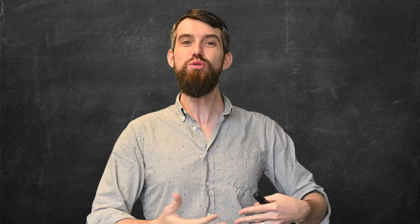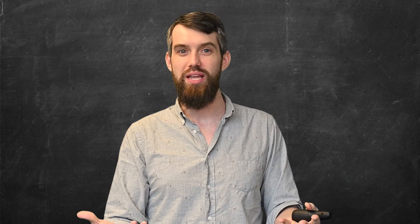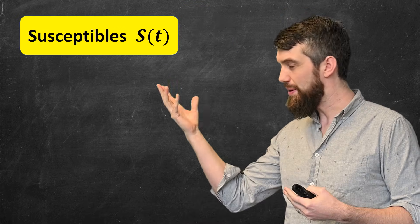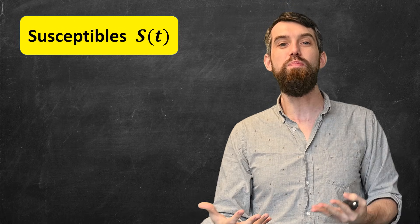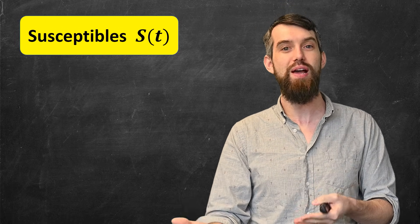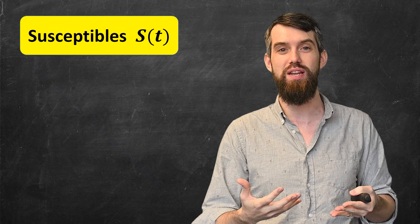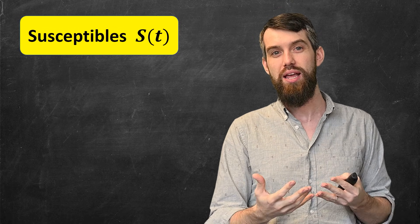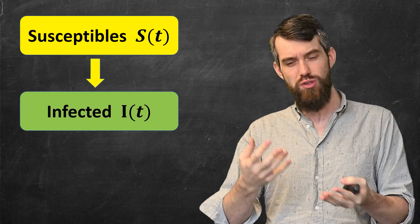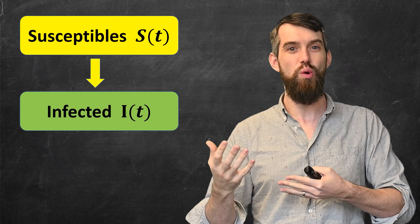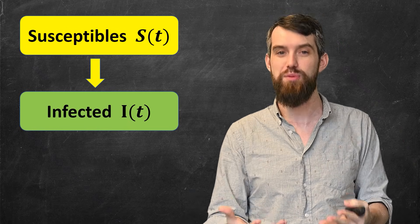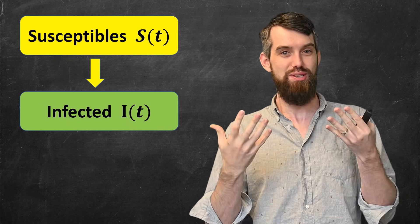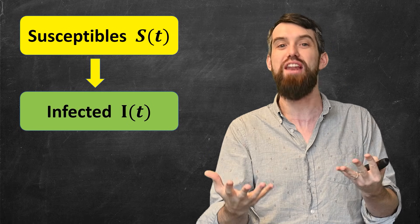The idea works as follows. I'm going to imagine taking all the people in the world and dividing them into three different categories. The first category is called susceptibles — all of the people that are capable of becoming sick from an infection. We'll assume we have some infection capable of infecting everybody, so at the beginning, everybody is going to be susceptible. After you've been infected, you're not susceptible to get it a second time — you just get infected once.